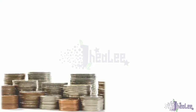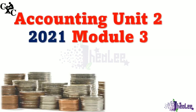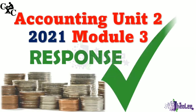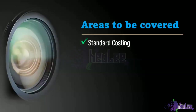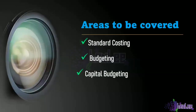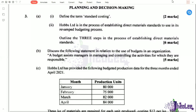Welcome back. Today we're going to look at the CXC Accounting Unit 2 2021 Module 3 response. If you have missed the response for Module 1 and Module 2, the links are in the description below. We will be covering concepts relating to standard costing, budgeting, and capital budgeting. We begin by looking at the first part of the question, which asks us to define the term standard costing.